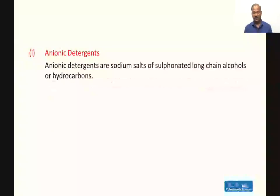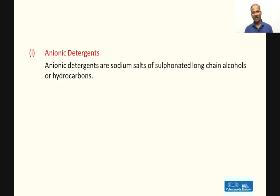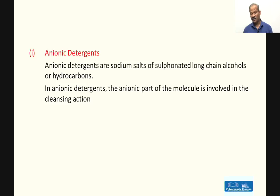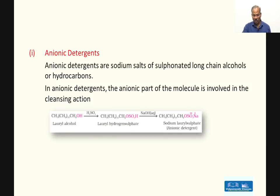Anionic detergents are basically sodium salts of sulfonated long chain alcohols or hydrocarbons. Unlike soaps — which are sodium or potassium salts of long chain carboxylic acids — anionic detergents are sodium salts of long chain sulfonic acids. In these detergents, the anionic part of the molecule is involved in cleansing action. An example: lauryl alcohol reacts with sulfuric acid to form lauryl hydrogen sulfate, which then reacts with sodium hydroxide to form sodium lauryl sulfate.